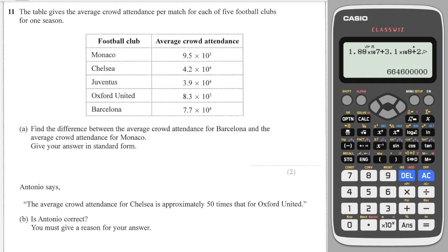Still a very common question this. You get given a few sets of standard form. And it says, find the difference between the average crowd attendance for Barcelona and the average crowd attendance for Monaco. So the word difference means to subtract. So I take Barcelona, which is the larger one, times 10 to the 4, and I subtract Monaco, which is the smaller one, which is times 10 to the 3. And I get a difference of 67,500.